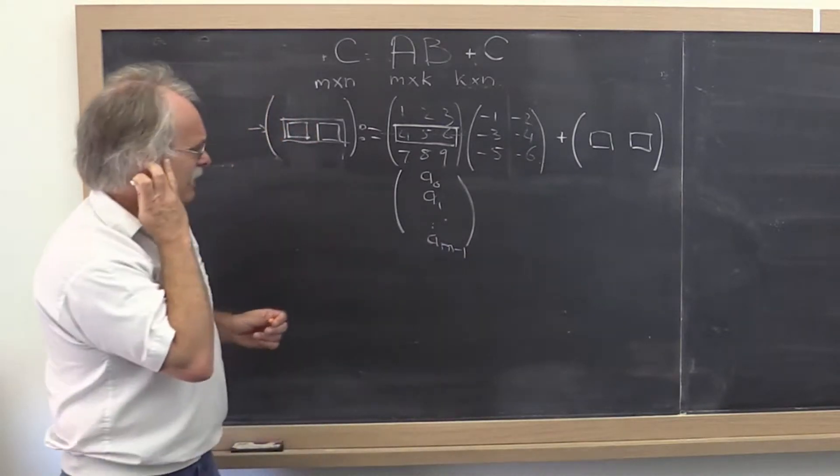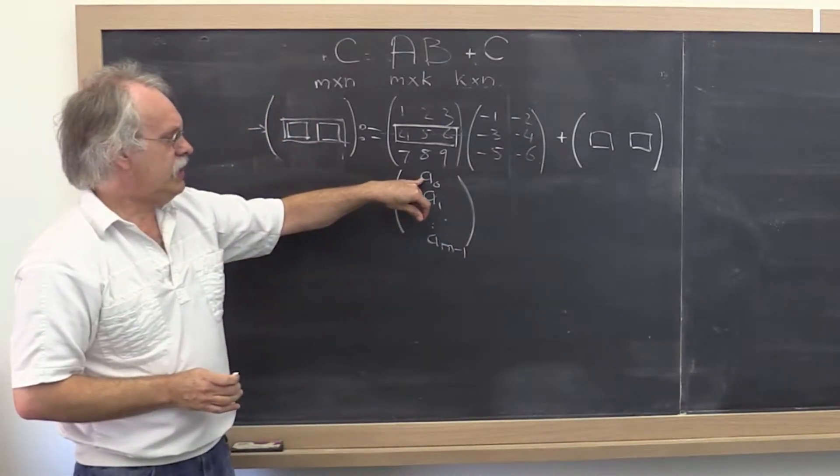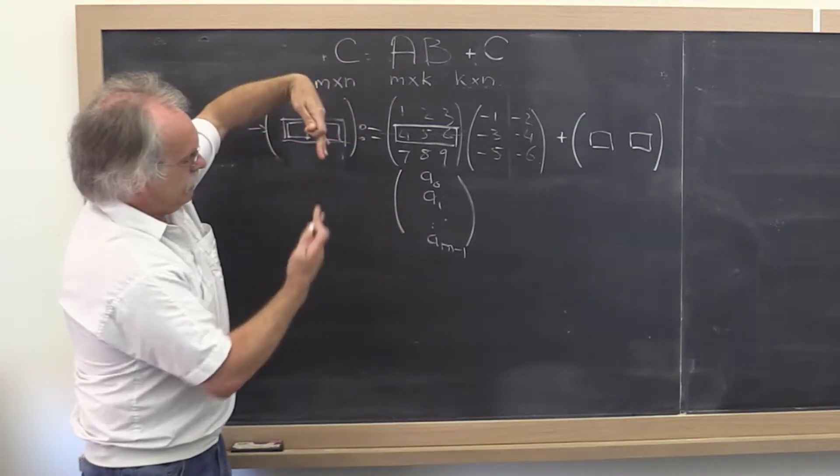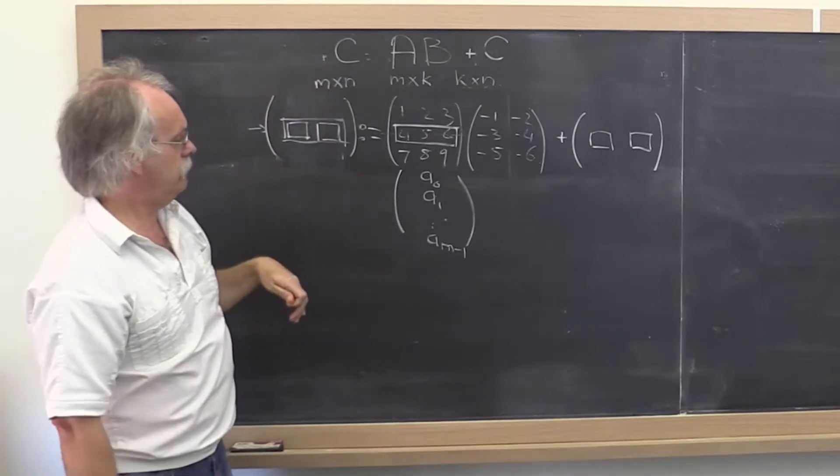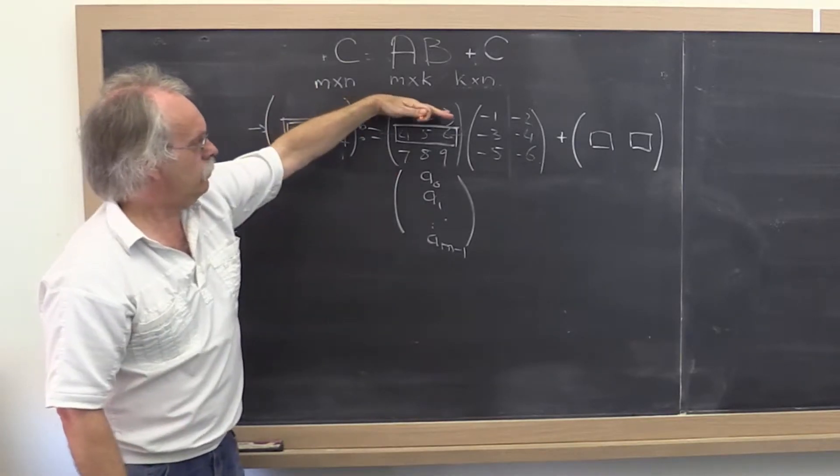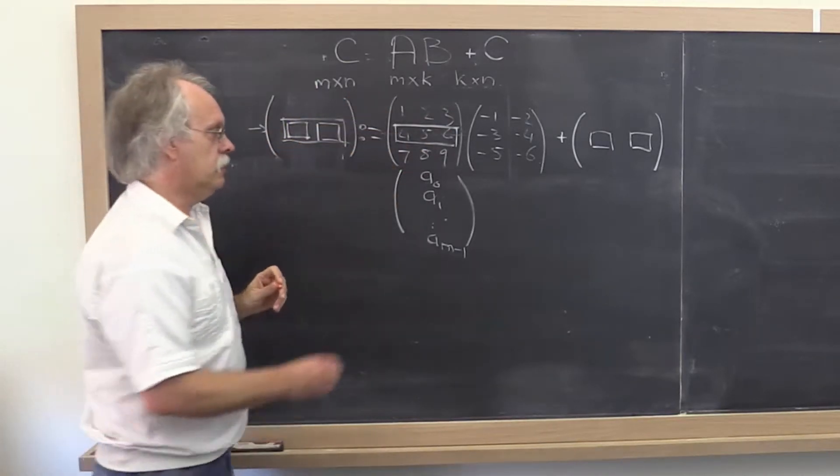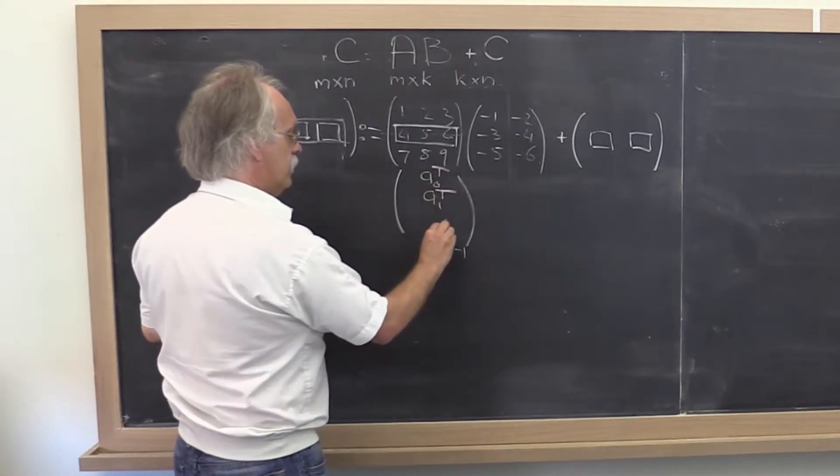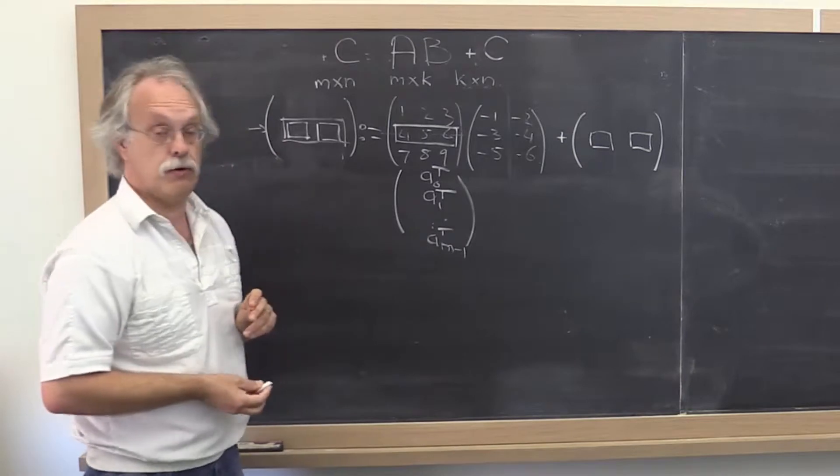Now wait a second. We decided to use lowercase letters for vectors. This would be like a whole bunch of vectors on top of each other. That's not the same as a whole bunch of row vectors on top of each other. So to denote that these are row vectors, I'm going to add a T to this label for the row here.